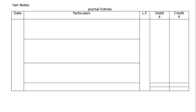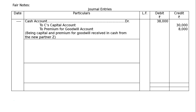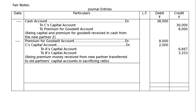Journal entries: we will be passing the journal entries in the fair notes only, in journal format with no date. First entry: Cash account debited 38,000 — capital 30,000 and premium contribution 8,000 out of 10,000 — to C's capital account 30,000 and to premium for goodwill 8,000. Being capital and premium for goodwill received in cash from the new partner C.